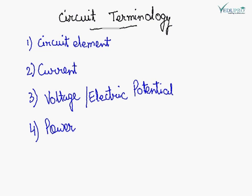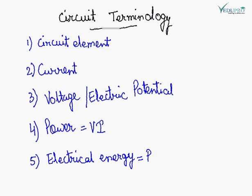Power is the product of voltage into current. Electrical energy is defined as the product of electric power and time, that means it is equal to power P into time.